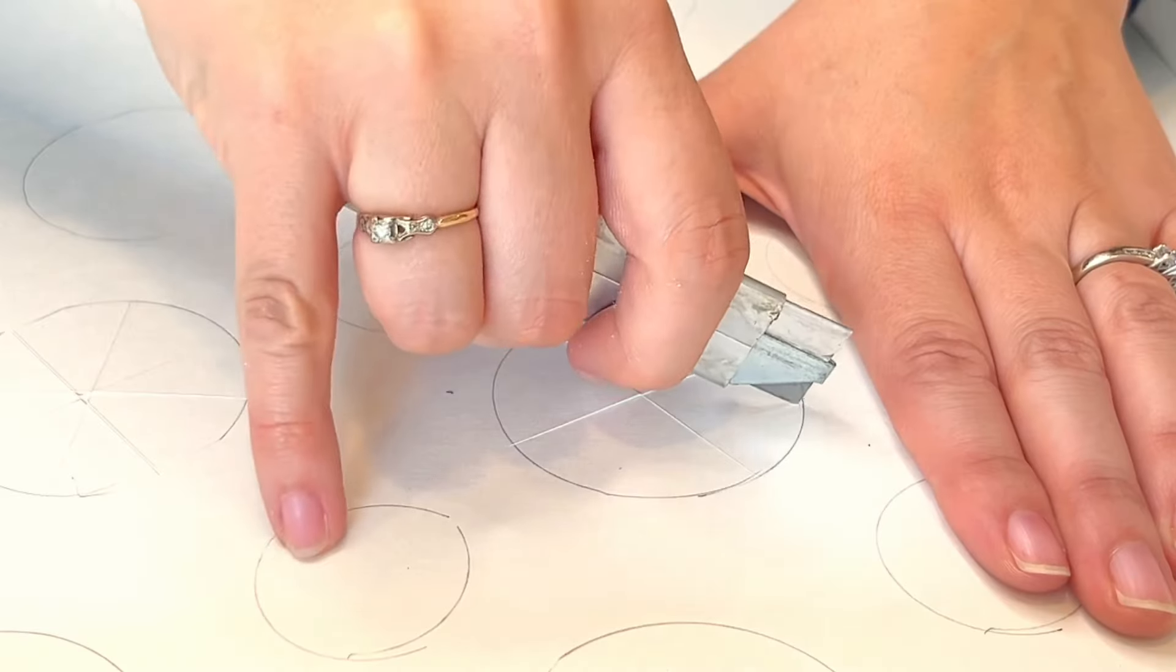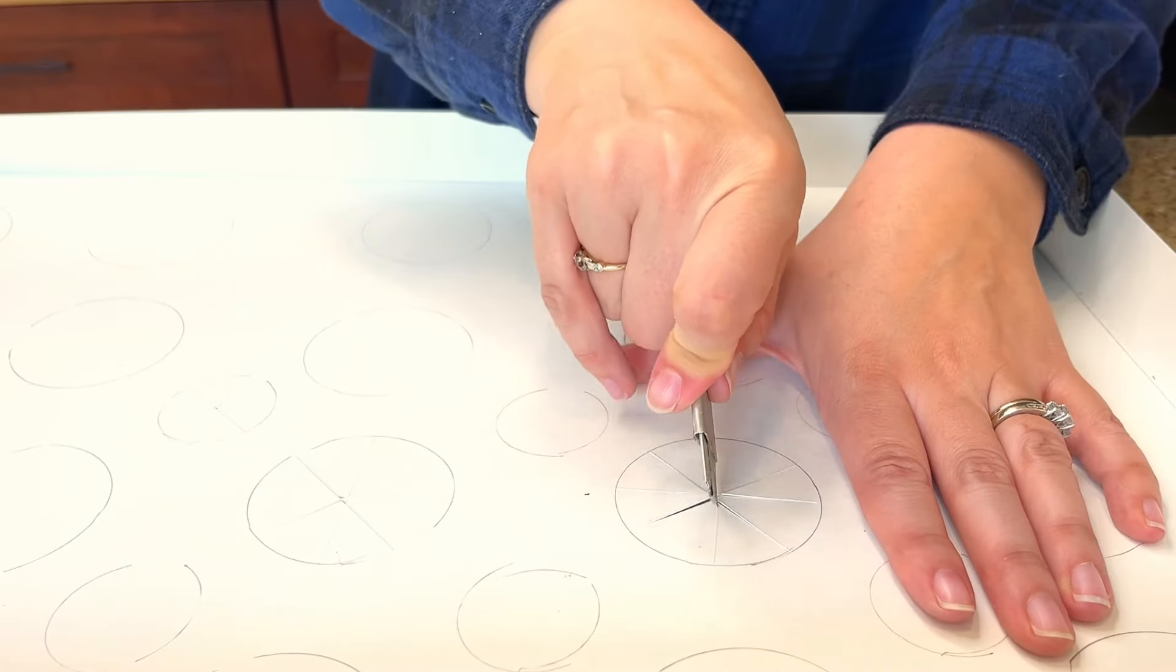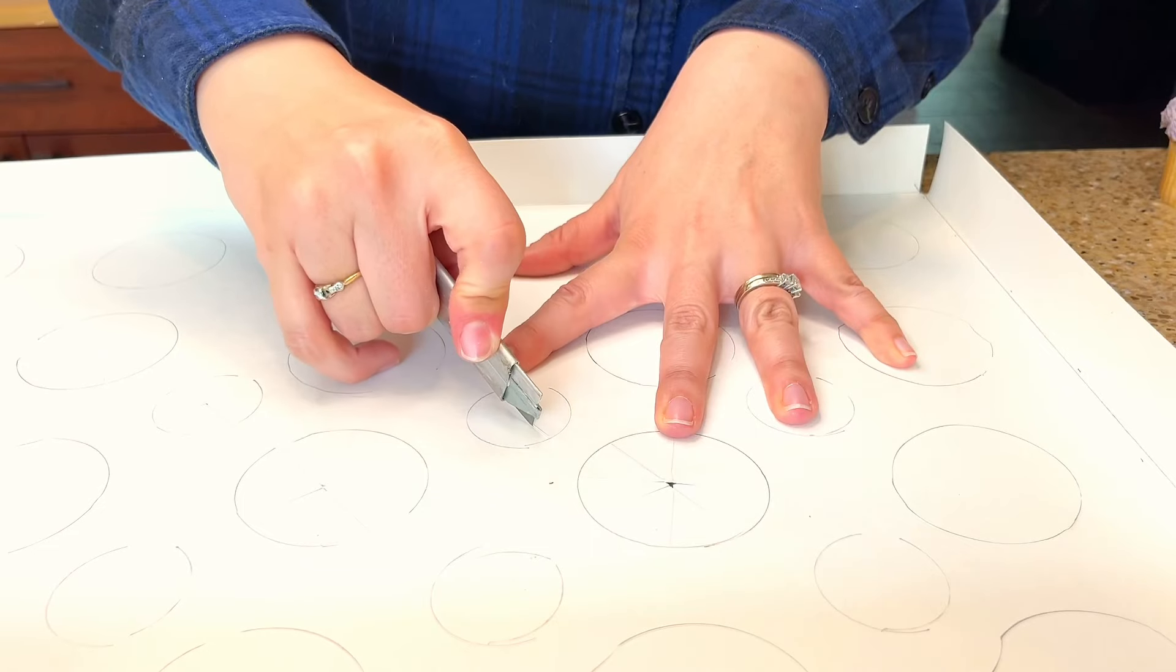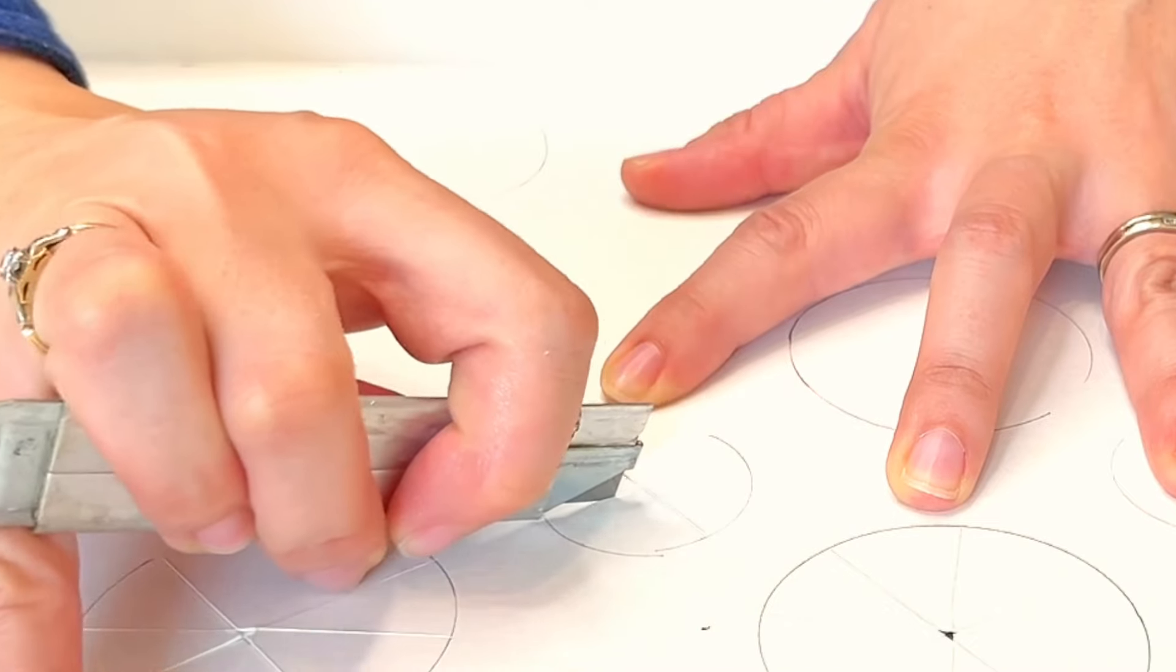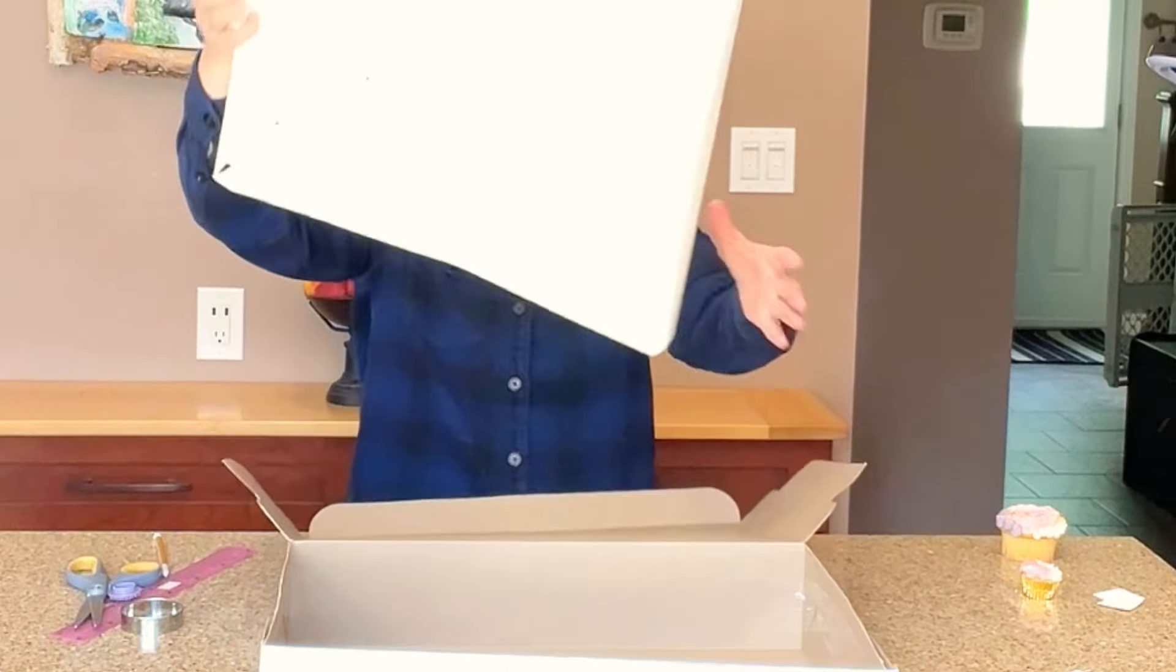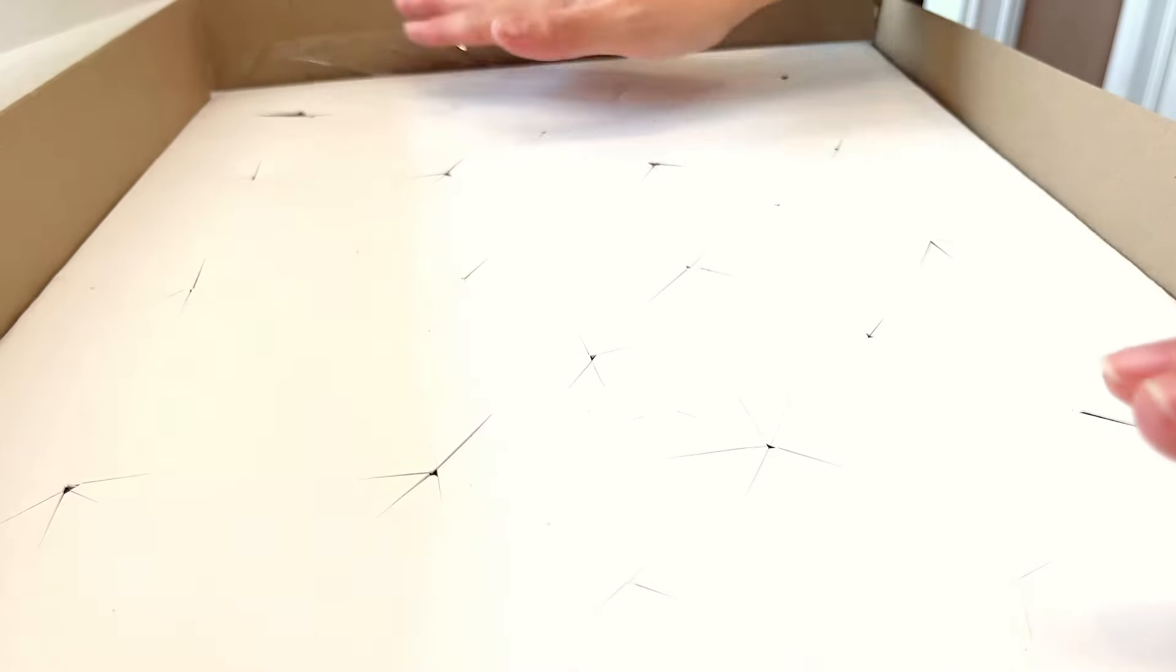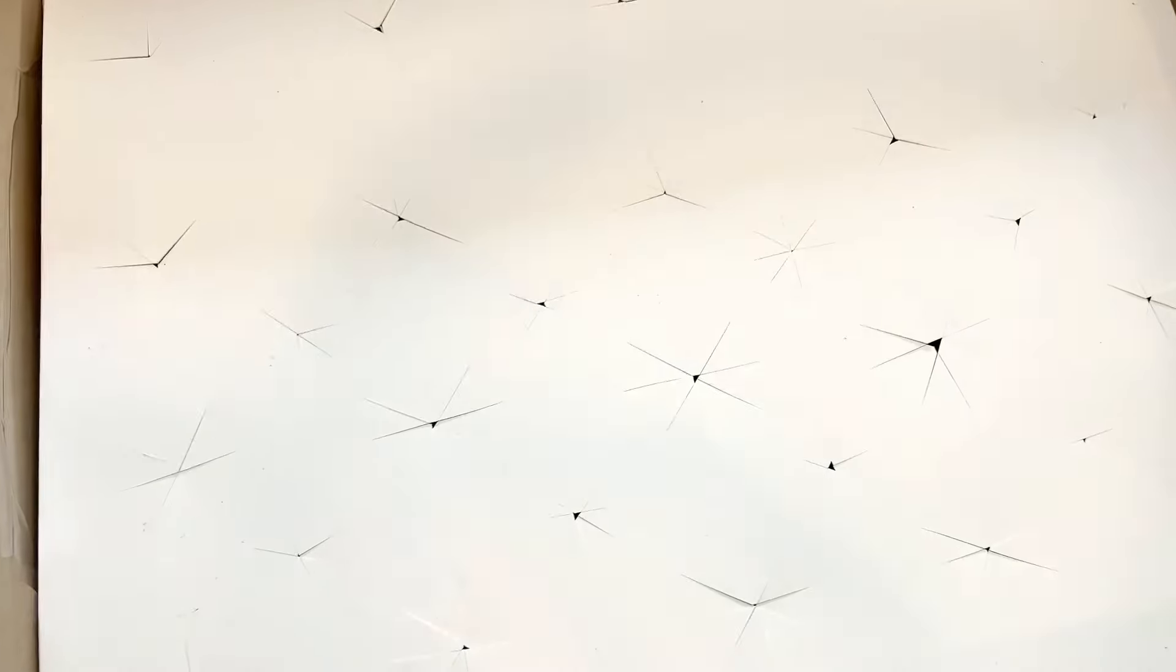To make it easier to fit your cupcakes in the holes, you can fold back the flaps to open up the circles before placing the insert in the cupcake box. Now that all the holes are cut, I'm going to place my insert inside the box. It should fit snugly and securely and I'm ready to place all my decorated cupcakes inside the box.